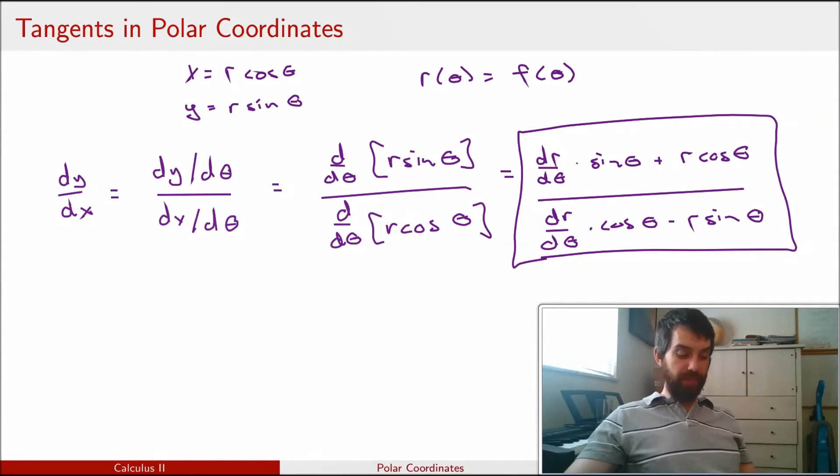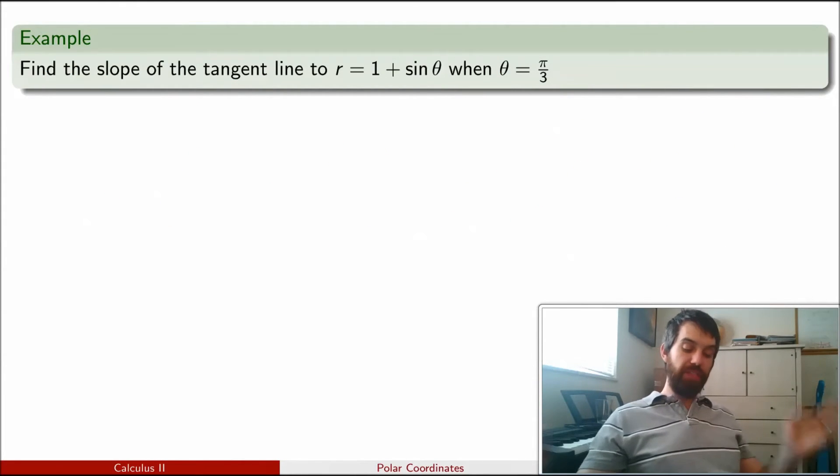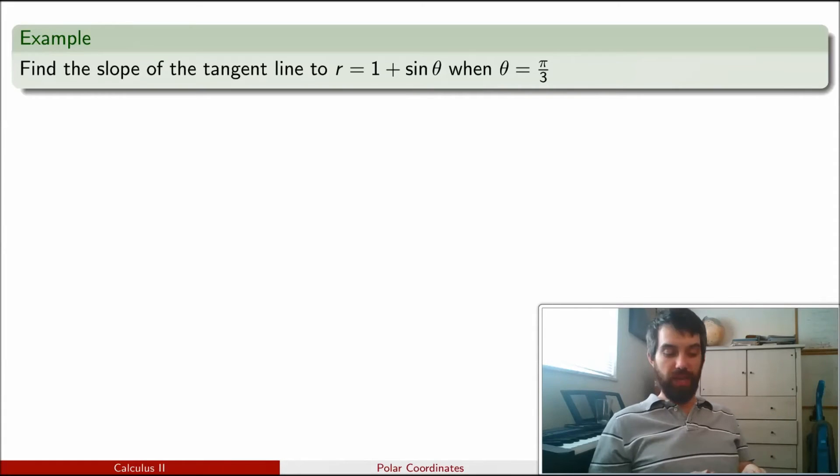So let's run this out in a specific example. I have the same r that I saw in the previous video, r is 1 plus sine theta. And the question is, what is the slope of the tangent line for some particular theta value, in this case theta equal to pi over 3.